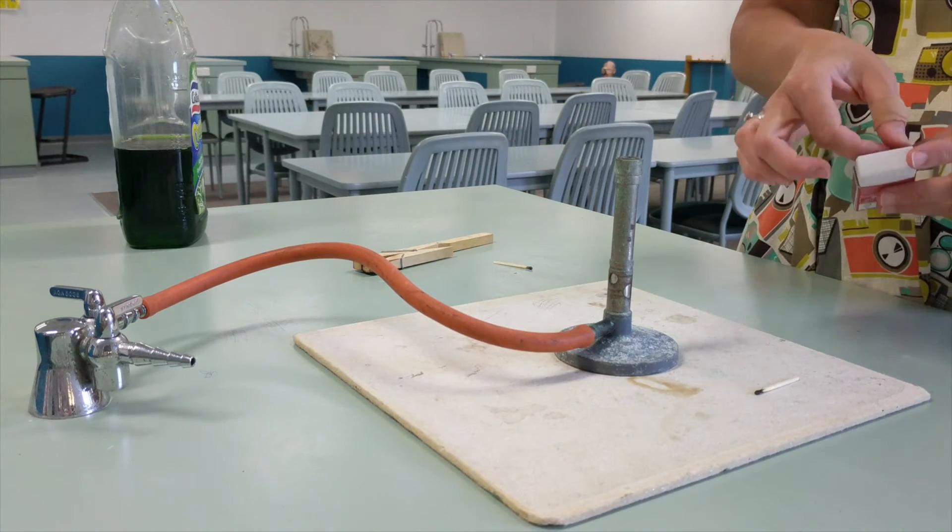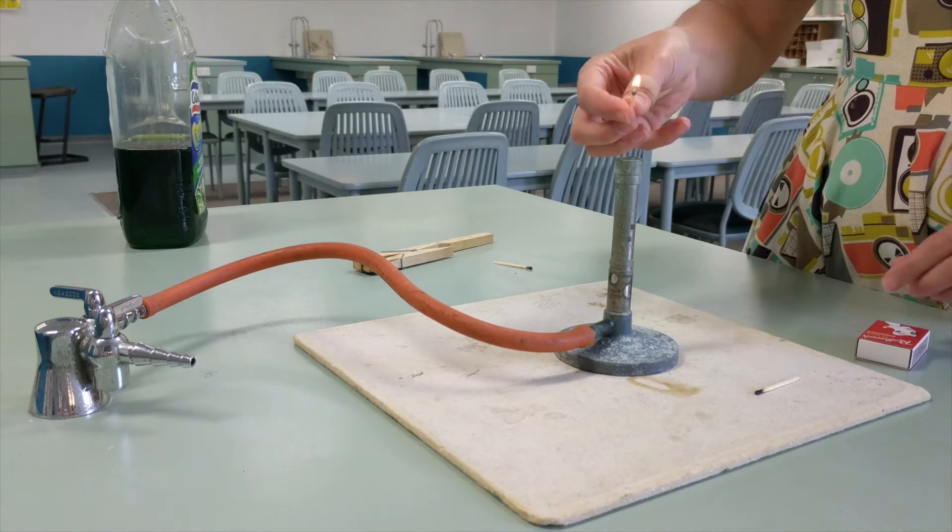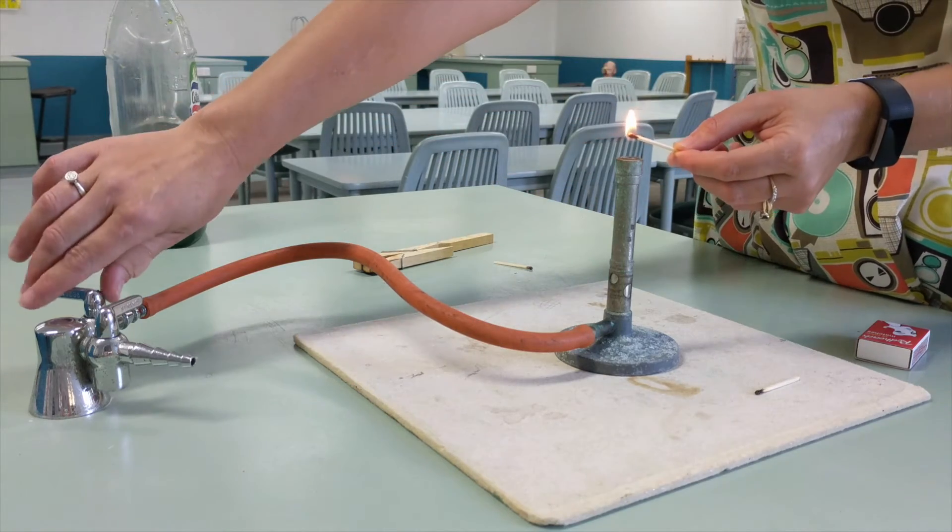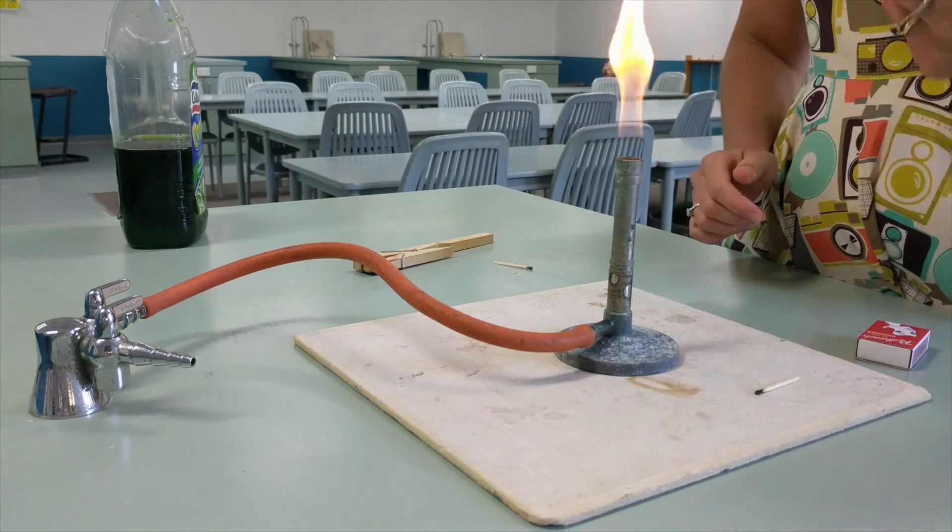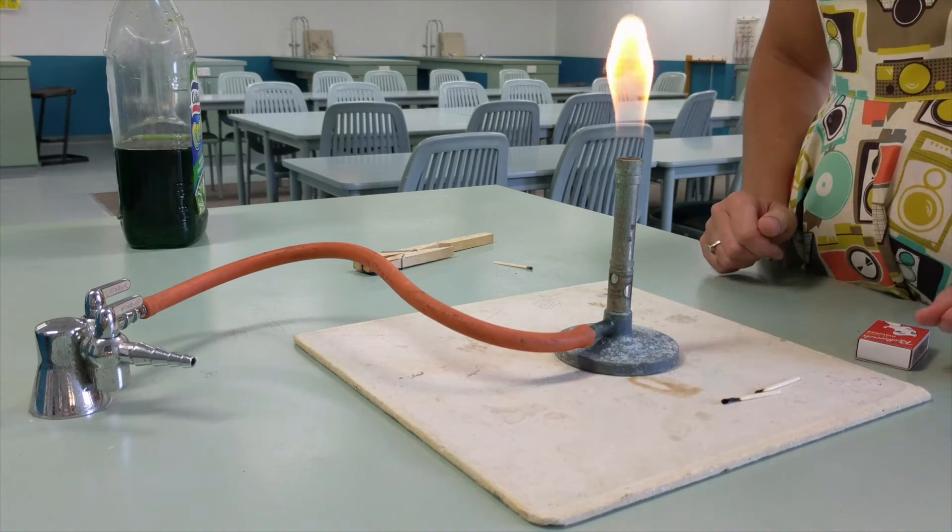Next step is to light a match. And then either you or your lab partner can turn on the gas. Make sure you shake the match out. Don't blow it because you might accidentally blow the Bunsen out.